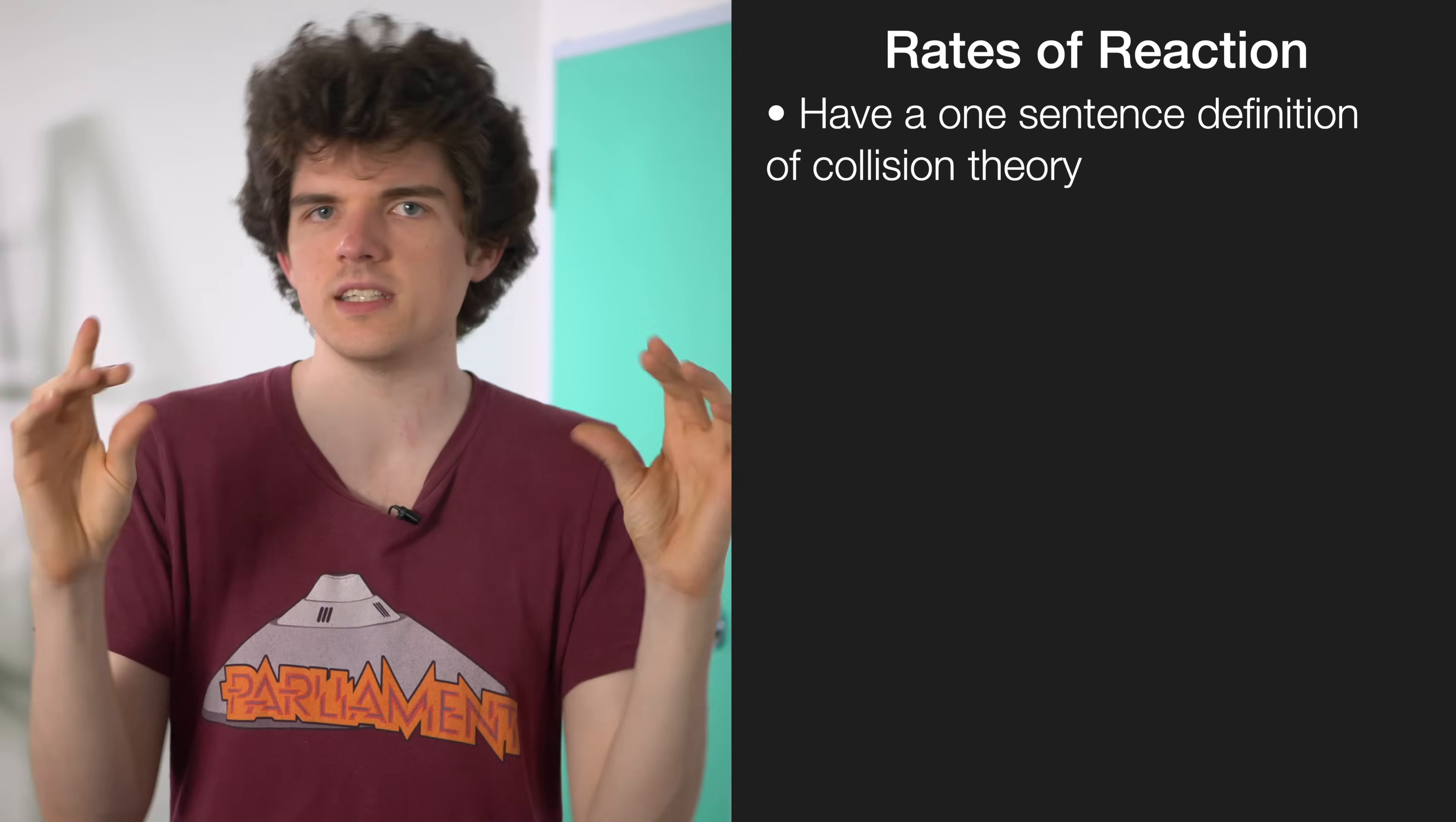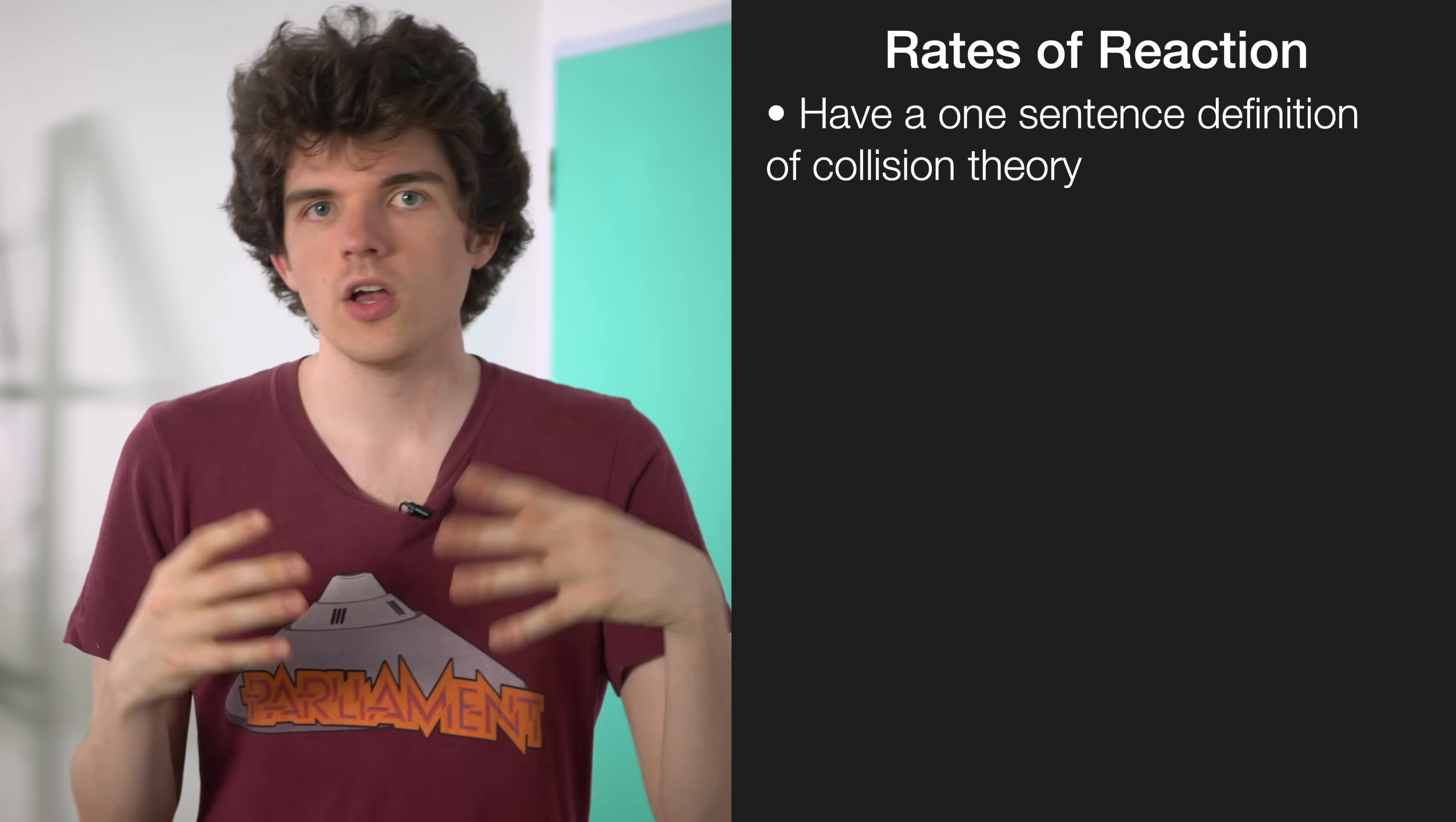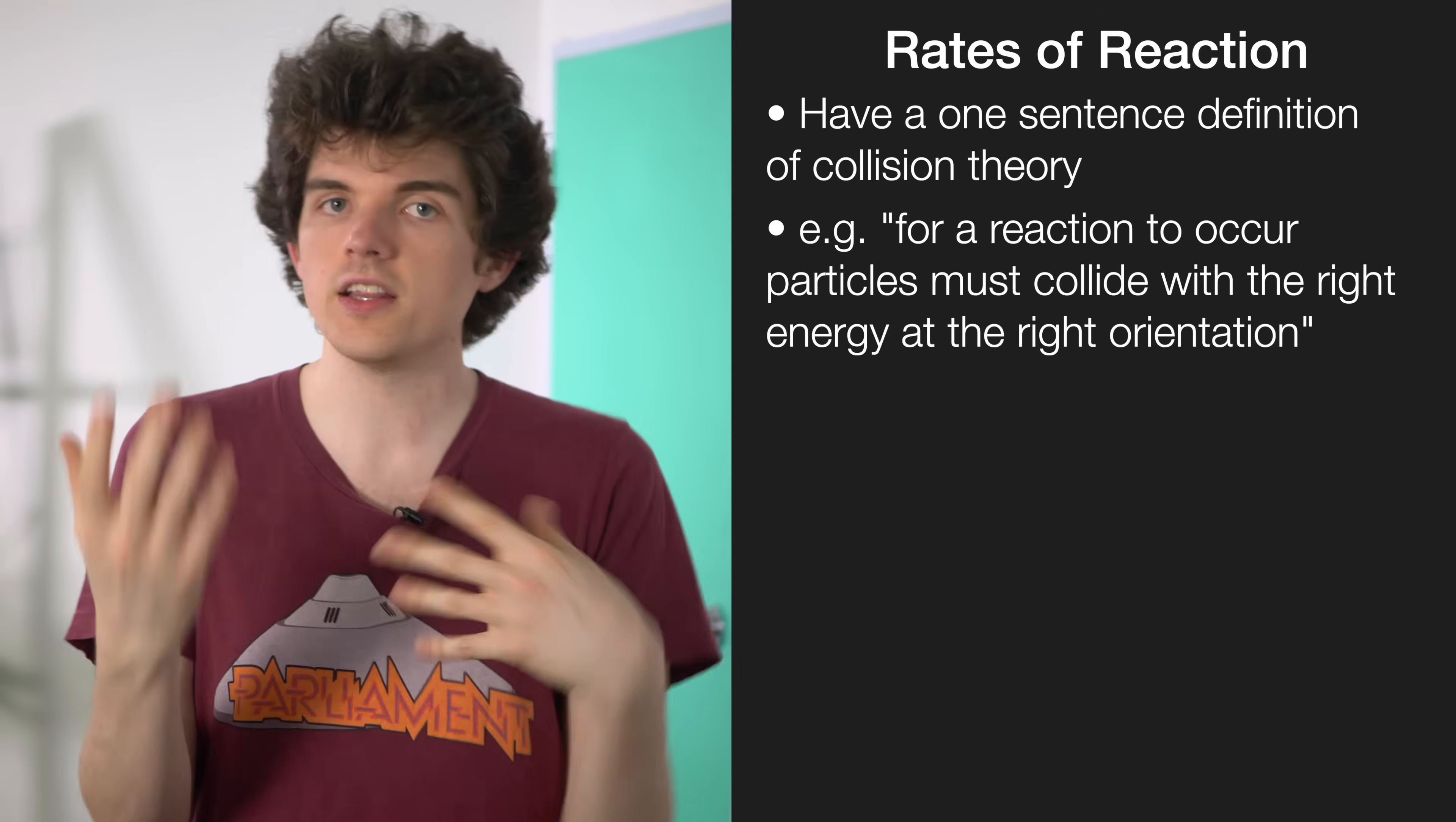For the reaction rates question, it's really important to understand how collision theory works and also how different things affect the rate of reaction. For collision theory, it's really important to have a one-sentence description of what it is. For example, something like: for a reaction to occur, particles must collide with the right energy at the right orientation.